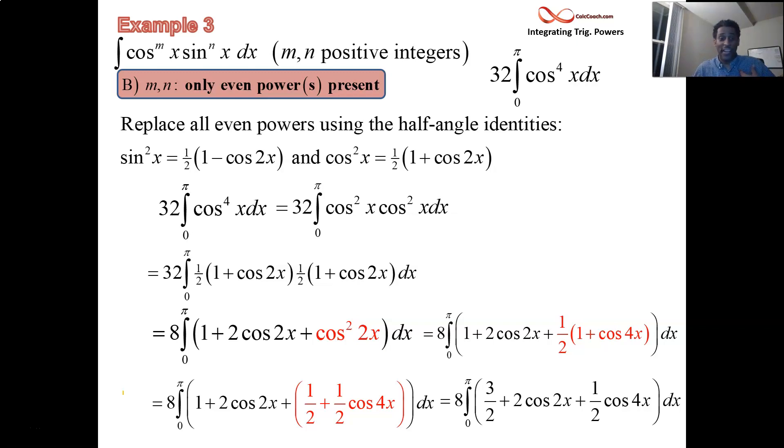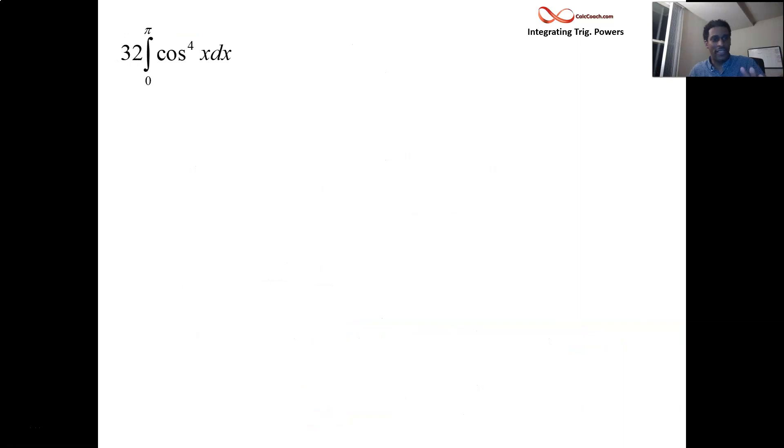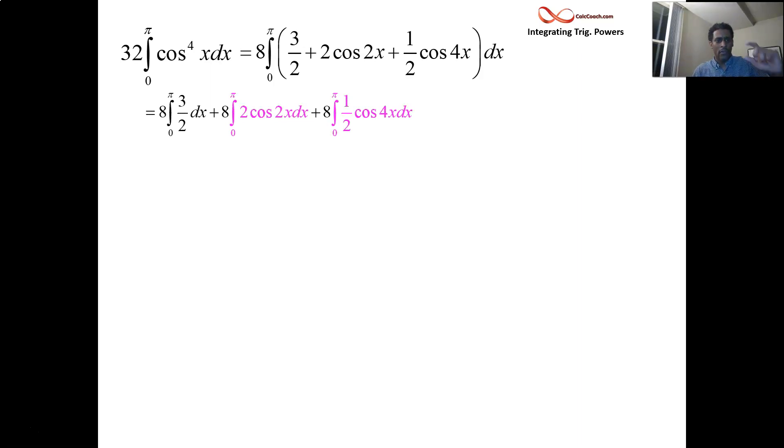So we have three terms to integrate. We know how to integrate three-halves - that constant times x. We know how to integrate the cosine of 2x. We also know how to integrate the cosine of 4x. So we're all set with this. We started with this, and we are now at this place here. But I want to tell you that those two, the trig integrals there, cosine of 2x and the cosine of 4x, there's something special about those two guys on the interval from zero to pi.